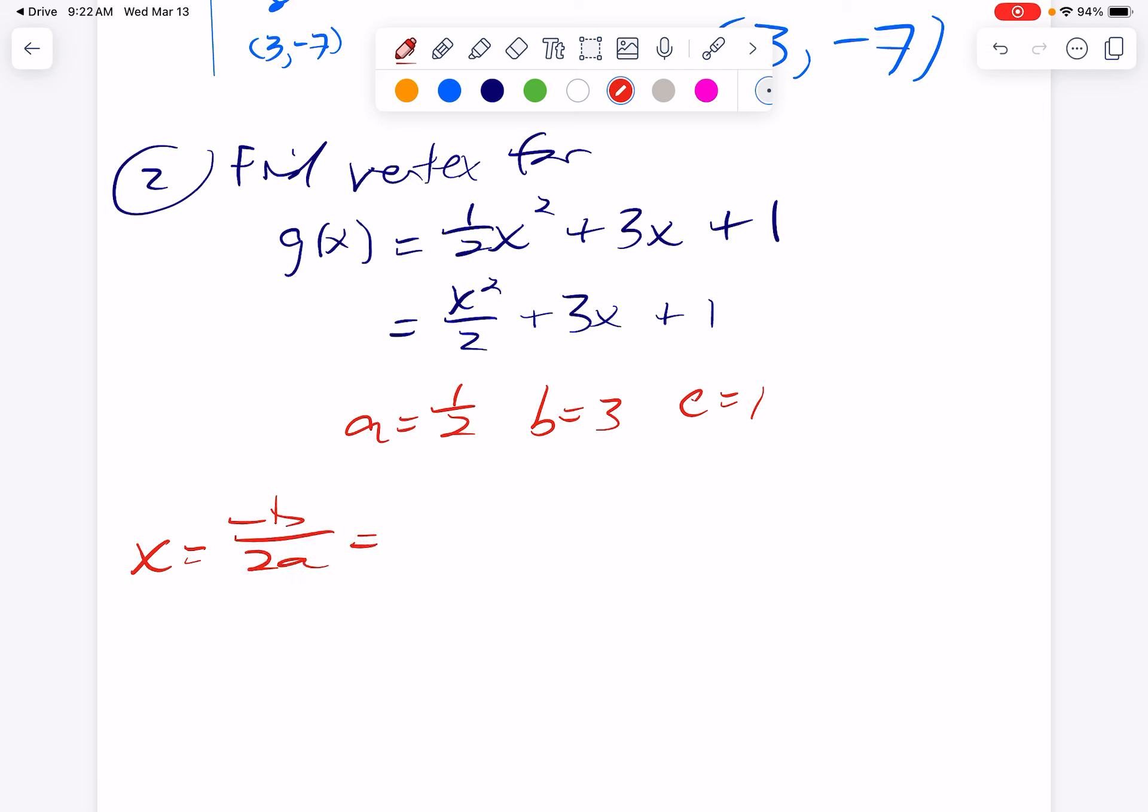So first we'll find the x coordinate because we have a shortcut for that. Minus b over 2a would be minus 3 over 1, which is negative 3. So the x coordinate of this vertex is negative 3. To find y, we plug in negative 3. So we have 1 half times negative 3 squared. Let's just remember, by order of operations, only x is getting squared. That 1 half is in front.